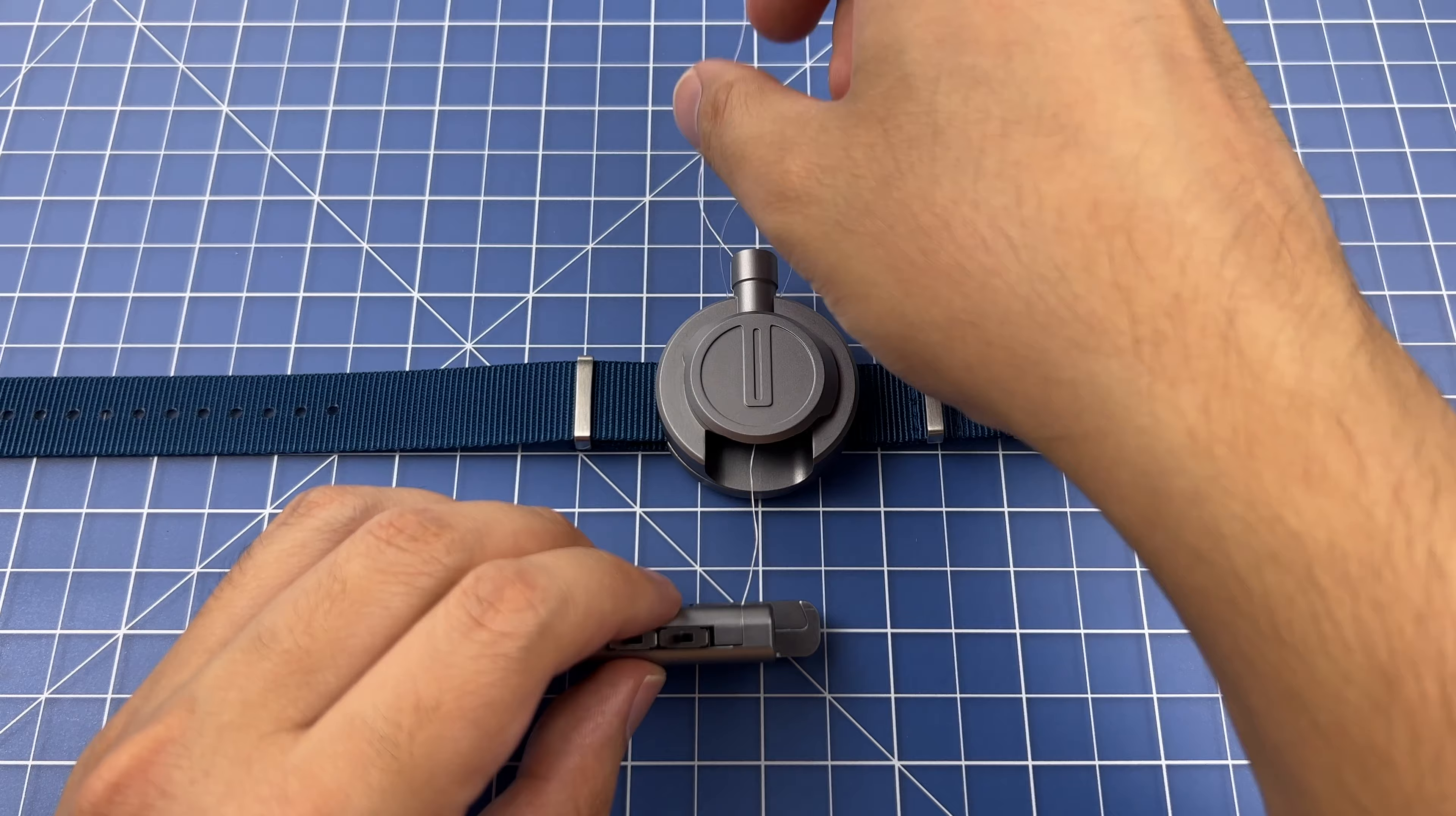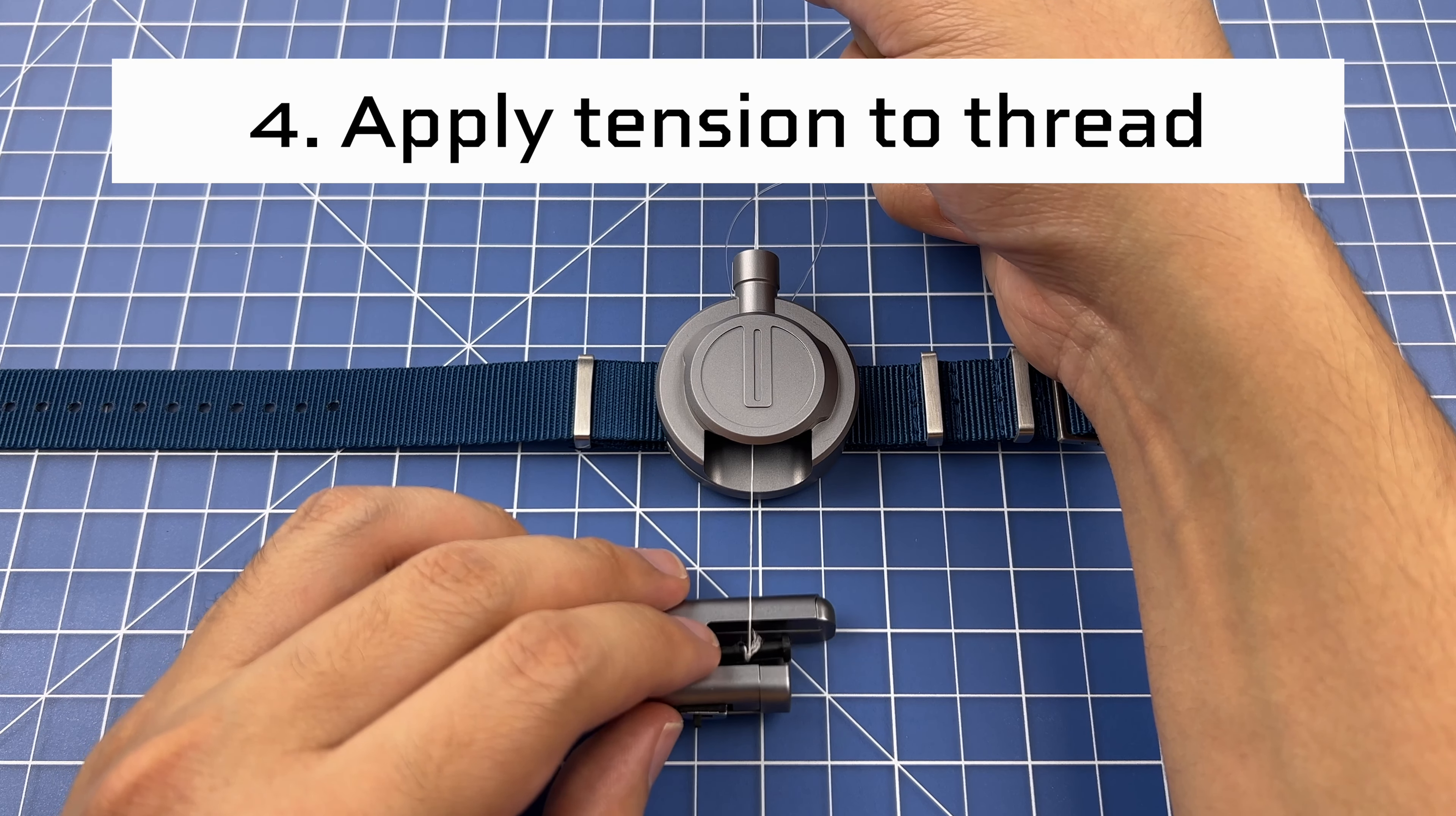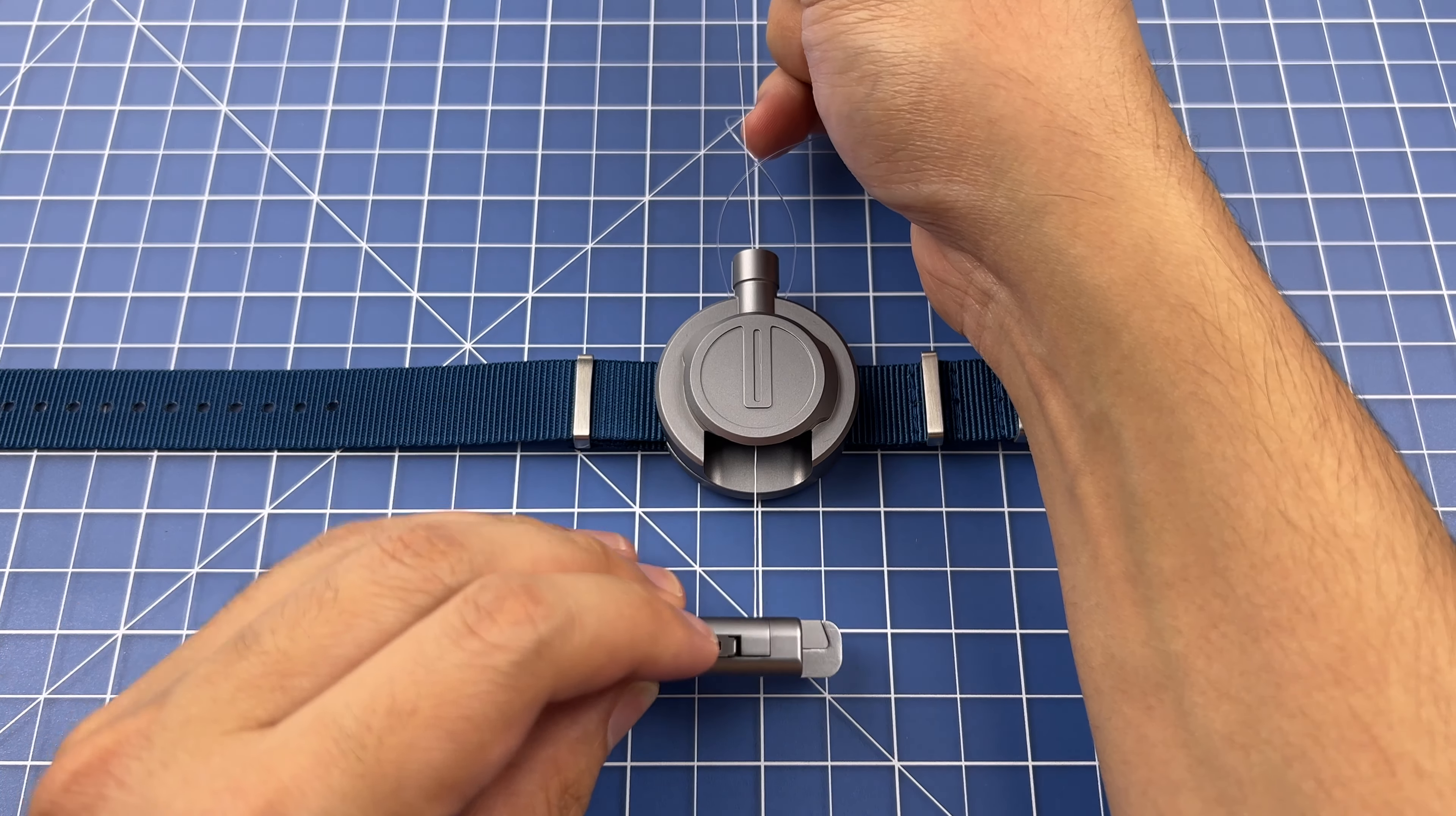Now the last step before you turn on the motor, take your other hand and make sure you're applying some tension to the line. This ensures the line does not load onto the spool loose, which can cause issues when it's shooting out. Now you're ready. You've done all the steps. Take this top switch and just flick it to the on position.